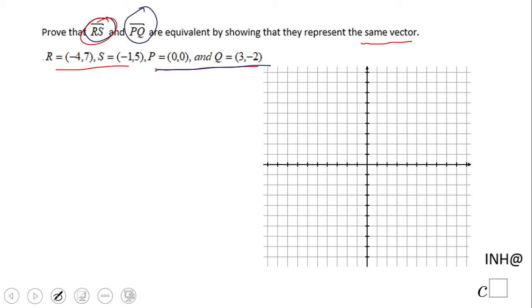They want us to see if they are equivalent vectors. One way to do this is the graphical way. Let's take a look at how we do that - we simply plot the points.